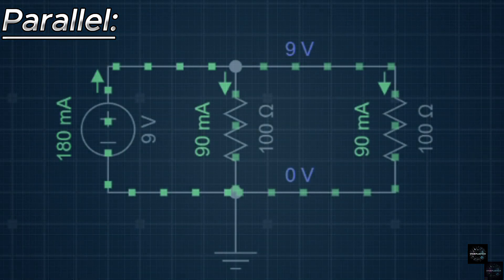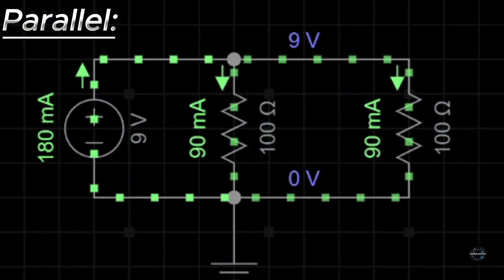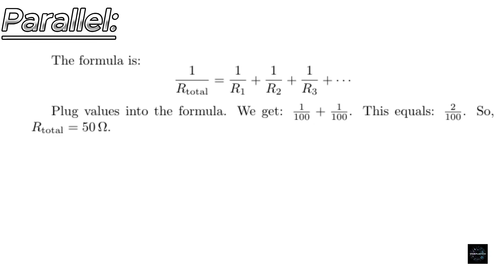Next, we have resistors in parallel. In this configuration, the current splits and flows through each resistor separately. The total resistance is calculated using this formula.